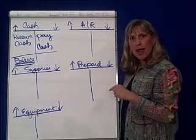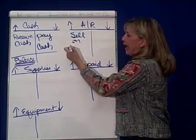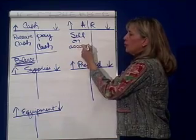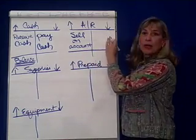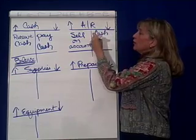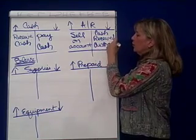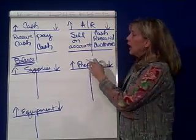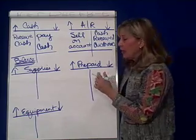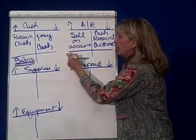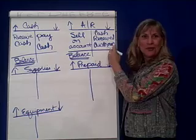Accounts receivable — another asset account. Accounts receivable increase when you sell on account; in other words, you sell to customers who, instead of giving you cash, give you their credit card. And you decrease accounts receivable when cash is received from your customers — in other words, your customers are paying their bills. The normal balance you would expect to find will be a debit balance, because you usually have more promises to pay you than the cash you've received.